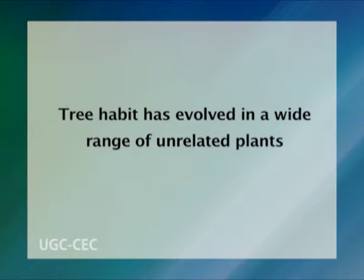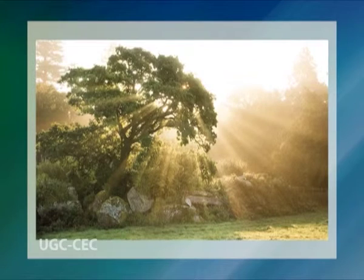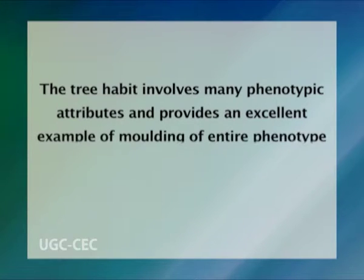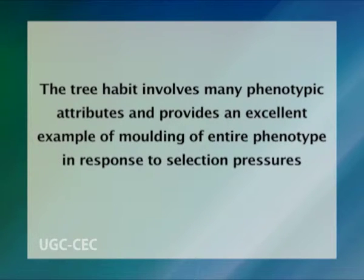Tree habit has evolved in a wide range of unrelated plants, providing a superb example of convergent evolution, mainly for the purpose of gaining height to get maximum light. Evolution of trees can be better understood with due consideration to all these aspects and attributes. The tree habit involves many rather than few phenotypic attributes and provides an excellent example of moulding of the entire phenotype in response to selection pressures. An interesting question is: what are these selection pressures in response to which tree habit evolves as a collective response of all phenotypic features?